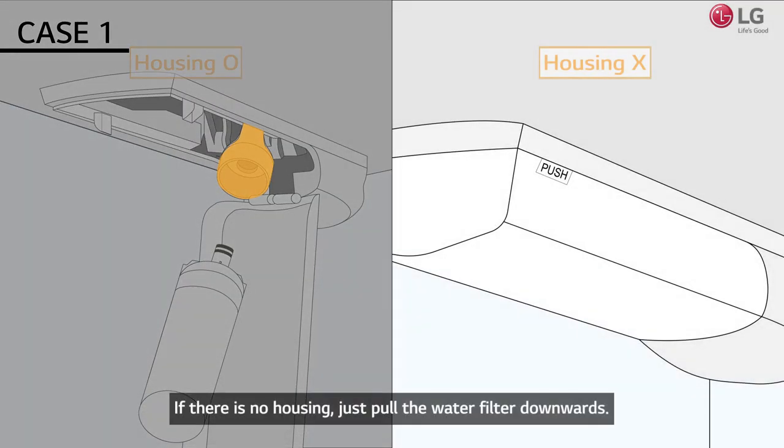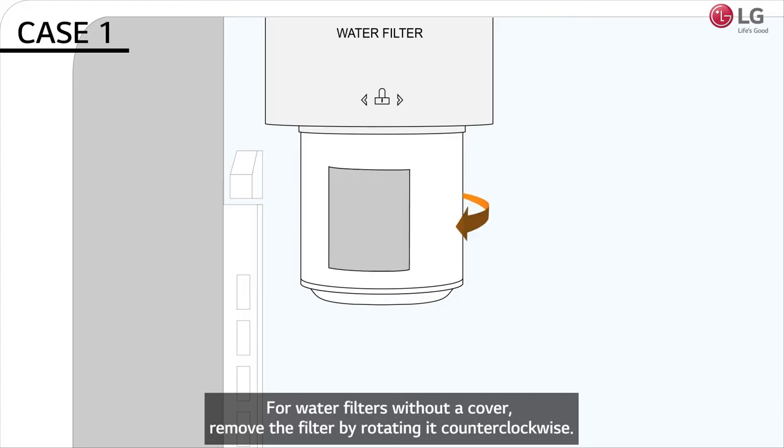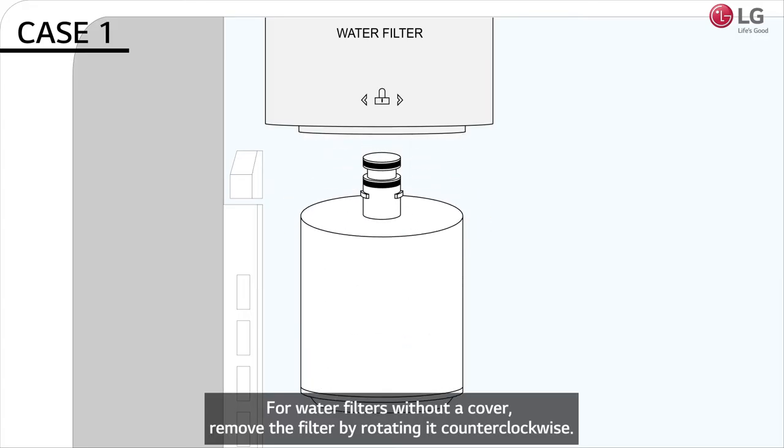If there is no housing, just pull the water filter downwards. For water filters without a cover, remove the filter by rotating it counterclockwise.